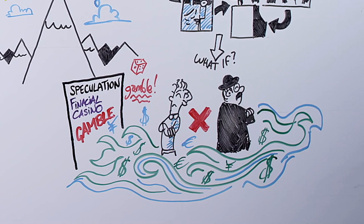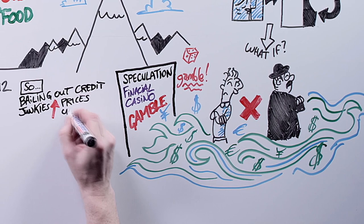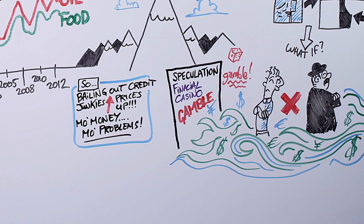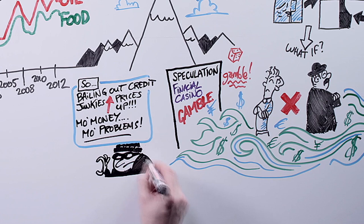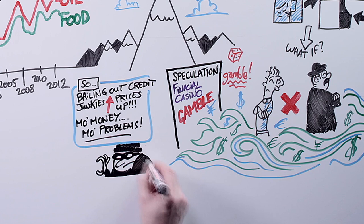And guess what food is in the great financial casino called the financial markets? It is a commodity to be gambled on. So the process of bailing out credit junkies in the rich world is driving up the price of survival for billions of people in the poor world and the more money we print the higher the price of food because ultimately printing money is nothing more than robbing for consumption today from the resources of tomorrow.